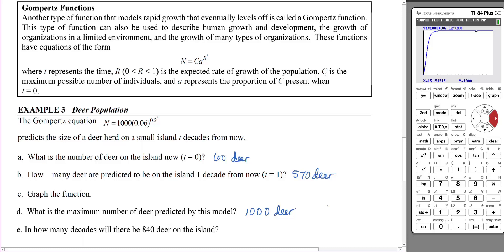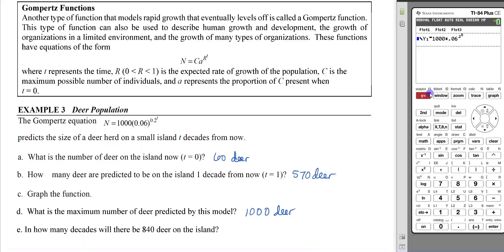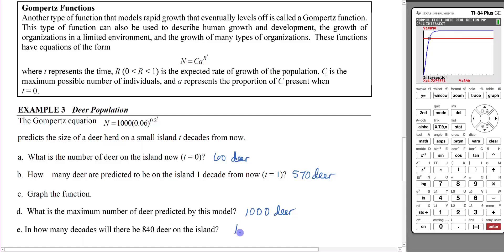In how many decades will there be 840 deer on the island? The number they've given you is a y value, so we can put 840 in there. We see the intersection and can calculate it. That would be 1.7 decades from now. So about 17 years from now, there's going to be 840 deer on the island.